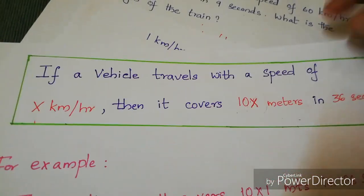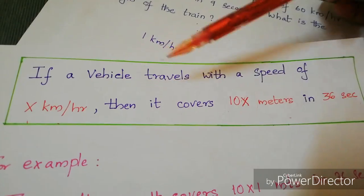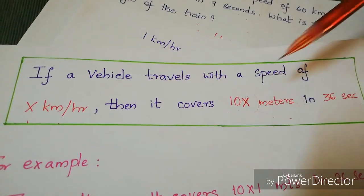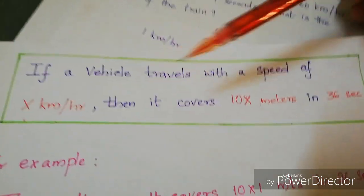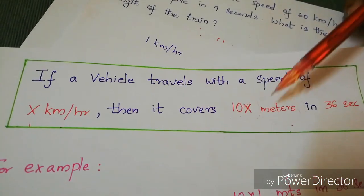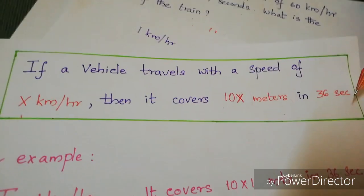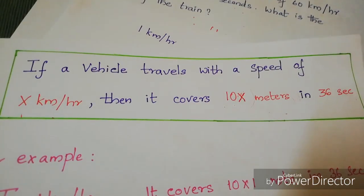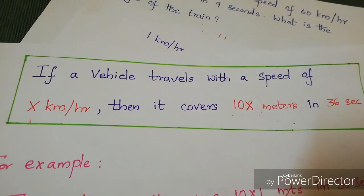Remember this one rule: if a vehicle travels at a speed of x kilometers per hour, it covers 10x meters in 36 seconds.